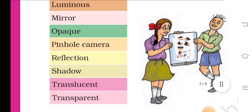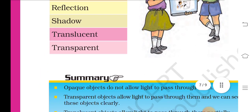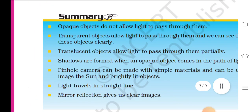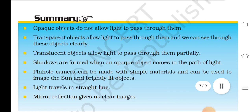Key terms: luminous, mirror, opaque, pinhole camera, reflection, shadow, translucent, transparent. Summary: Opaque objects do not allow light to pass through them.